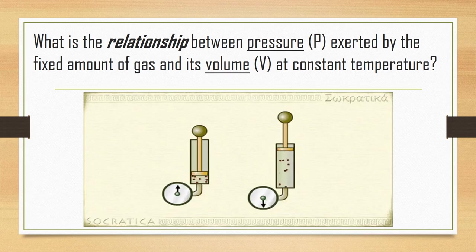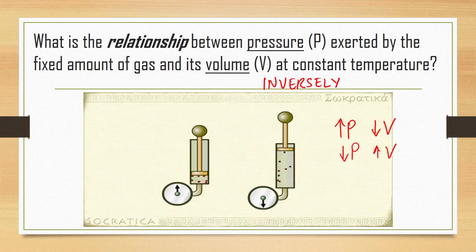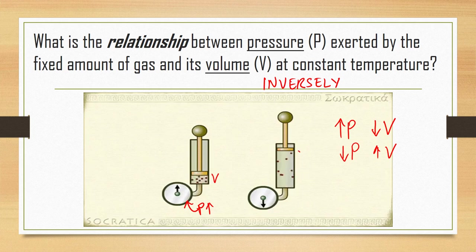From the equation form of Boyle's Law, the relationship between pressure and volume at constant temperature is inversely related. Higher pressure results in lower volume; a decrease in pressure results in an increase in volume. The GIF shows that when volume is very small, pressure is high, and when volume is large, pressure is low.